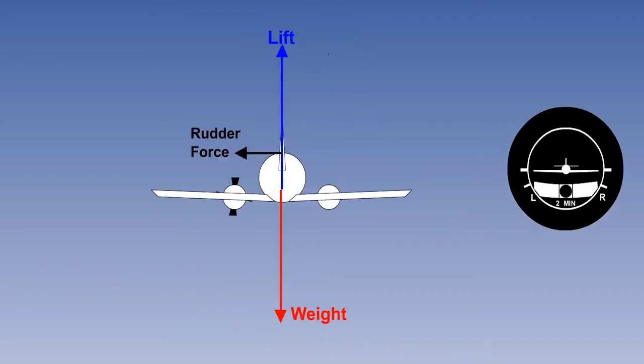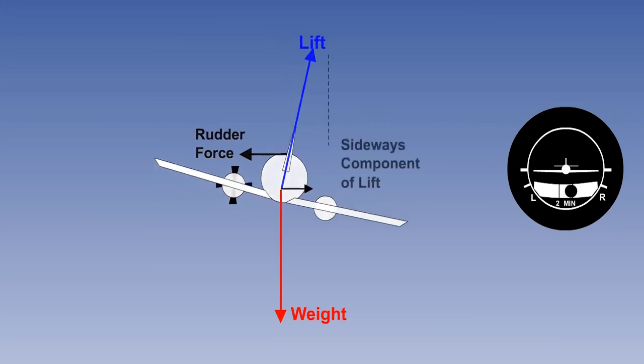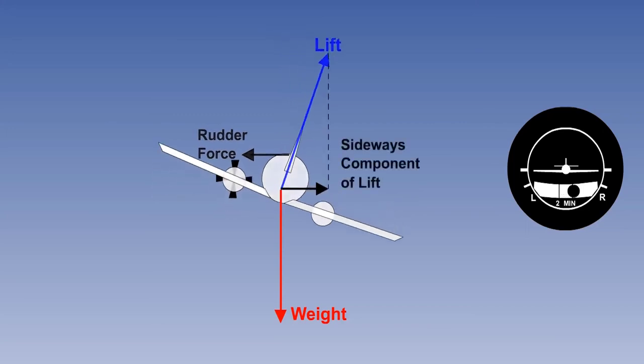It is more aerodynamically efficient to balance the rudder side force by banking towards the live engine so that lift gives a lateral component to oppose the rudder force. The bank angle must be restricted to 5 degrees to prevent significant reduction of the vertical lift component. Banking towards the live engine also reduces the side force on the fin from side-slip, which effectively reduces the yawing moment and gives more rudder authority to stop the yaw.